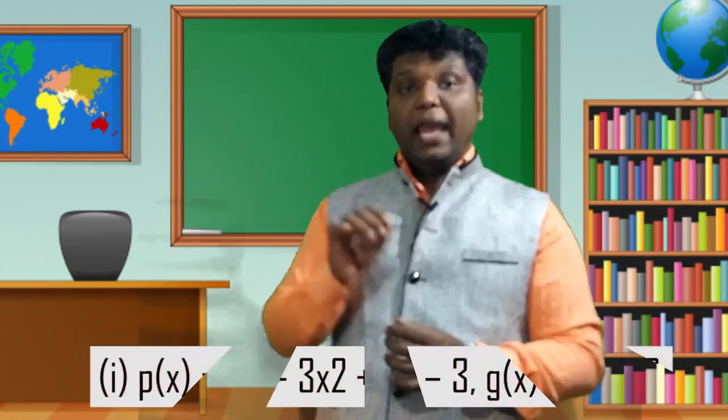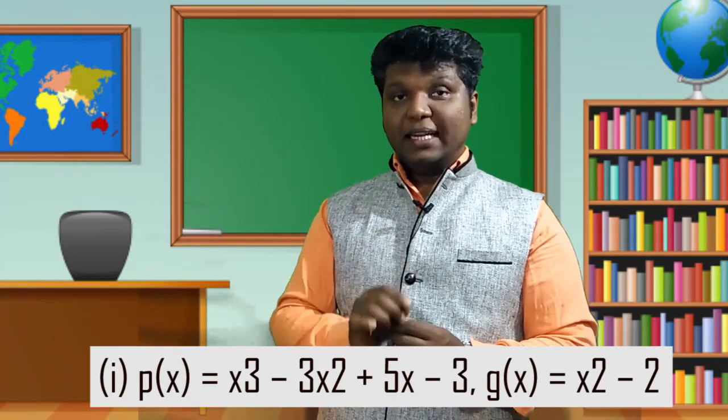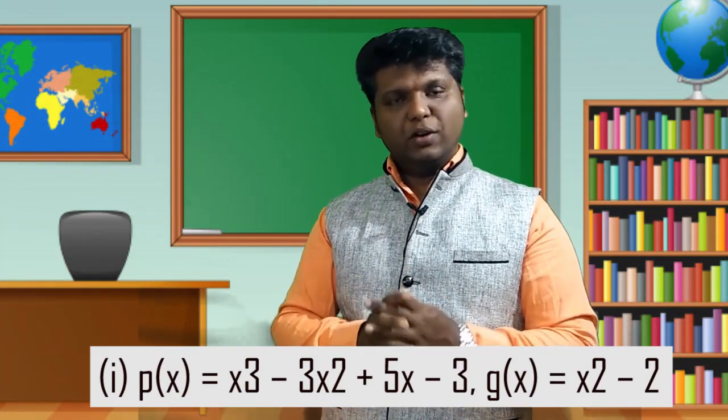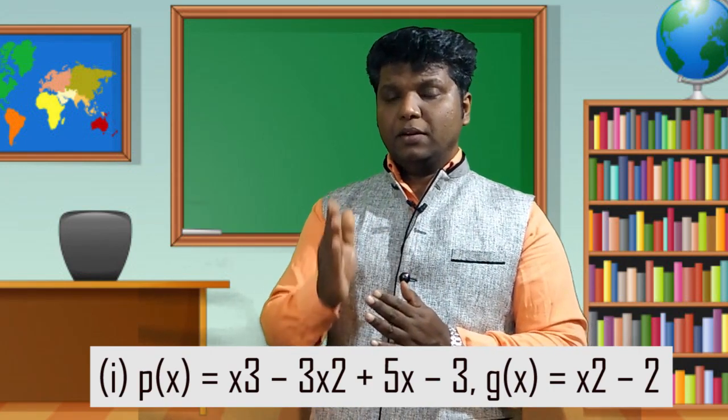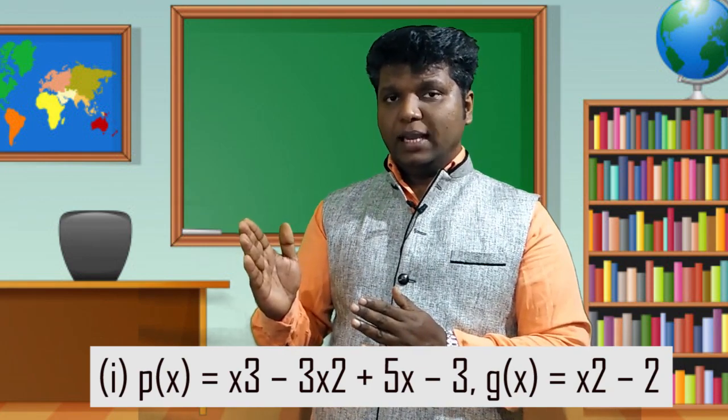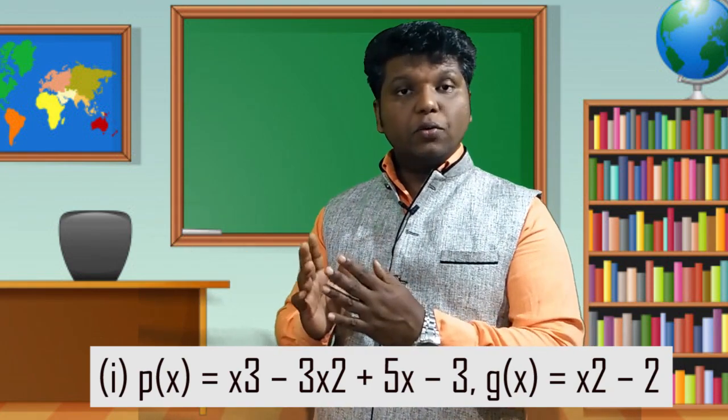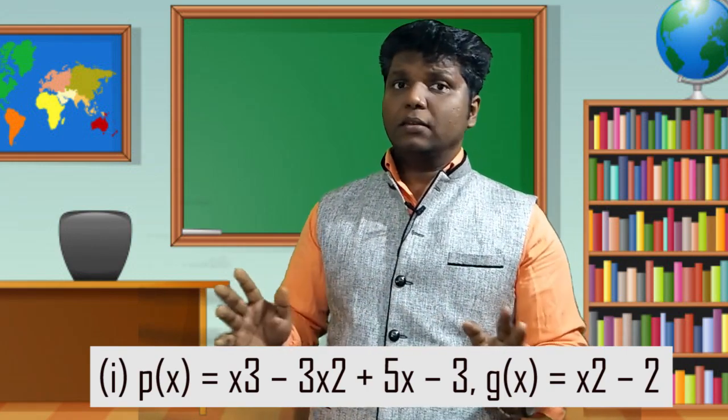We will now solve problems to understand this. Exercise 2.3, question one: p(x) = x³ − 3x² + 5x − 3. Check whether it is in standard form — degree 3 first, then degree 2, then x, then the constant. Yes, it is in standard form.